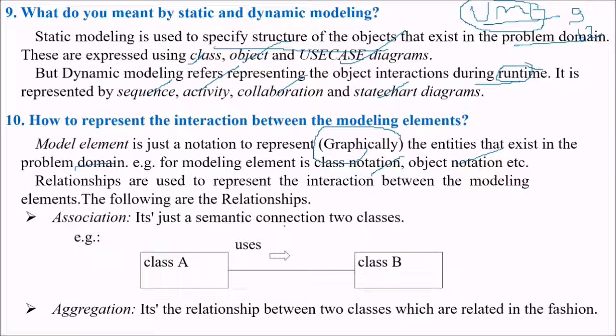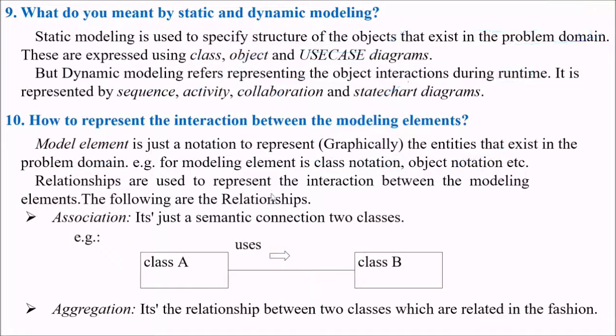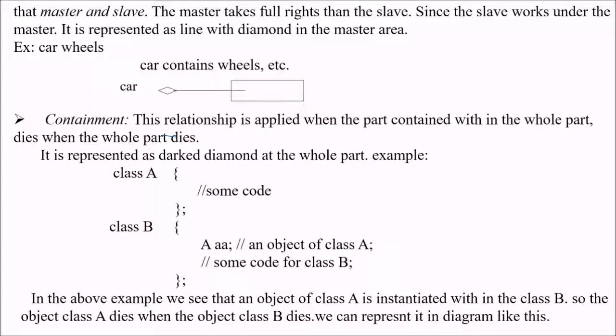Association is just a semantic connection of two classes. Aggregation is a relationship between two classes which are related in some fashion, like master and slave. The master takes full rights than the slave, since the slave works under the master. It is represented by the line with the diamond in the master area. Car is an aggregation because car contains wheels. Car is the master, wheels are the slave.